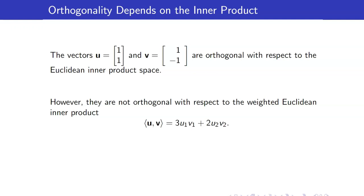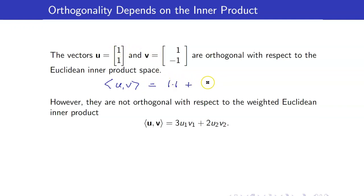Take note that orthogonality depends on the inner product. For example, let us consider these two vectors u and v. They are orthogonal with respect to the Euclidean inner product space because using this inner product, this is equal to 1 times 1 plus 1 times negative 1, which is really equal to zero.